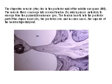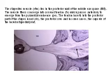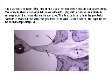This picture shows the stapedius muscle in the posterior wall of the middle ear space. The stapedius muscle lies within the pyramid, and its muscle fibers converge into a round tendon which passes anteriorly to emerge from the pyramidal eminence. The tendon inserts into the posterior part of the stapedial head, the posterior crus, and in some cases the capsule of the incus.